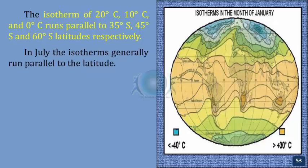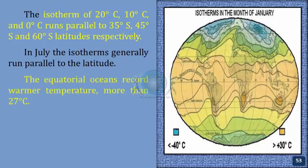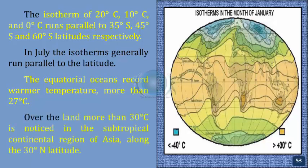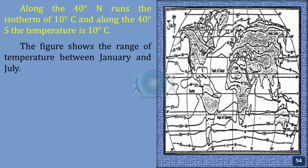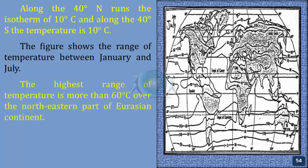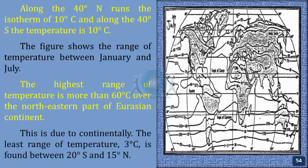In July, the isotherms generally run parallel to the latitudes. The equatorial oceans record warmer temperatures of more than 27 degrees centigrade. Over land, more than 30 degrees centigrade is noticed in the subtropical continental region of Asia along the 30 degrees north latitude. Along 40 degrees north runs the isotherm of 10 degrees centigrade, and along 40 degrees south the temperature is also 10 degrees centigrade. The highest range of temperature — more than 60 degrees centigrade — is found over the northeastern part of the Eurasian continent, due to continentality. The least range of temperature, about 3 degrees centigrade, is found between 20 degrees south and 15 degrees north.